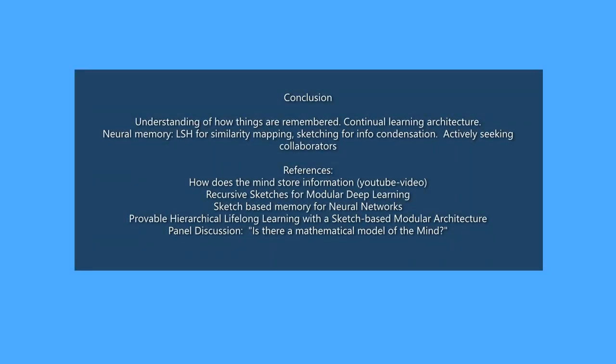In conclusion, we saw one proposal for a continual learning architecture based on sketching and locality sensitive hashing, which also gives a method for implementing neural memory. References are provided, along with a link to a panel discussion on a mathematical model for the mind, which includes Turing Award winner Geoffrey Hinton and neuroscientist Jack Gallant.